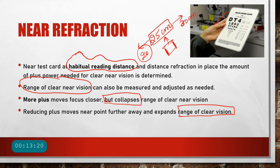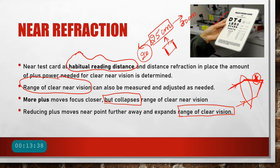Plus lenses simulate accommodation by causing more convergence and bringing rays of light to focus on the retina. For a better understanding of convex lenses, please visit my video on hypermetropia, where convex and plus lenses are explained in detail. The same plus lenses or convex lenses are used for presbyopia correction.